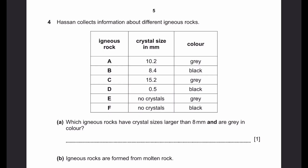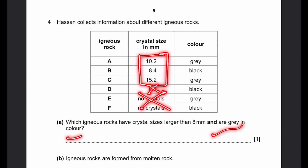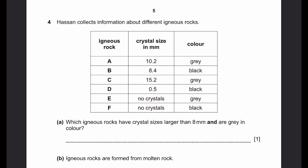Question 4. Hassan collects information about different igneous rocks. Part A: which igneous rocks have crystal sizes larger than 8 mm and are gray in colour? Crystal size larger than 8 mm means rocks A, B, and C — the rest either have small size or no crystals. And they also have to be gray in colour, so that gives us A and C. Rock B has black crystals so it does not count. The answer is A and C.